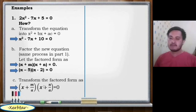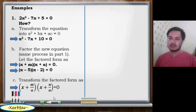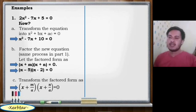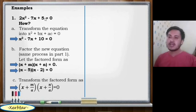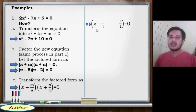Letter C: transform the factored form as (x + m/a)(x + n/a) = 0. Why do we need to do this? Since from the original equation we multiplied the value of a to c, now we do the inverse operation — we divide the value of a into the constant term of each factor. Thus, we have (x minus 5/2)(x minus 2/2) equals 0.